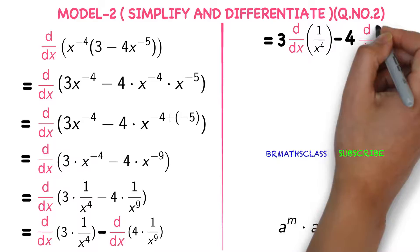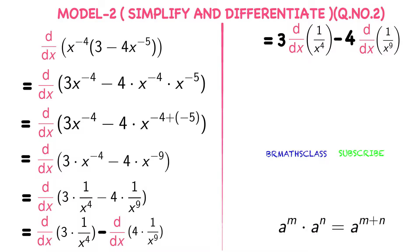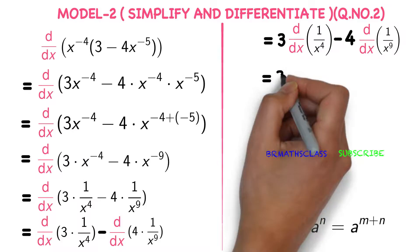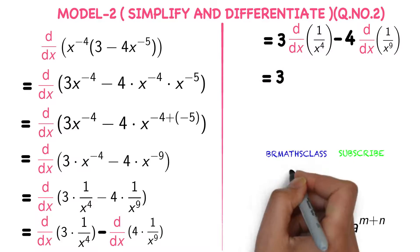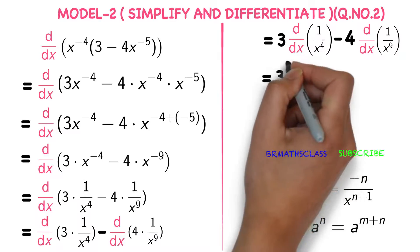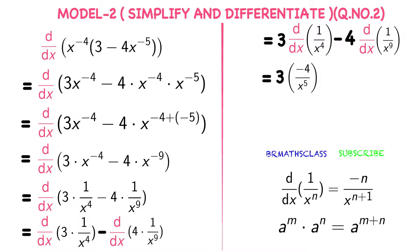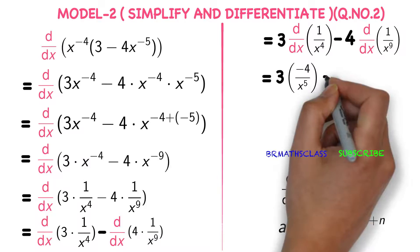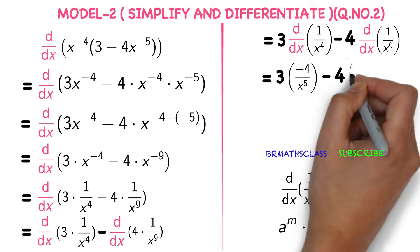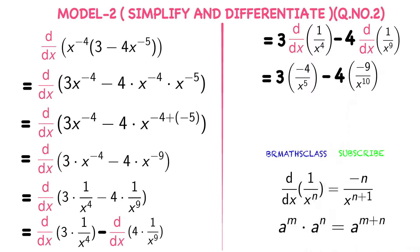We just applied the derivative of k·u formula. We know the derivative of 1 divided by x power n formula: derivative of 1 divided by x power n equals minus n divided by x power n plus 1. Applying this formula: derivative of 1 divided by x power 4 gives minus 4 divided by x power 5, and derivative of 1 divided by x power 9 gives minus 9 divided by x power 10.